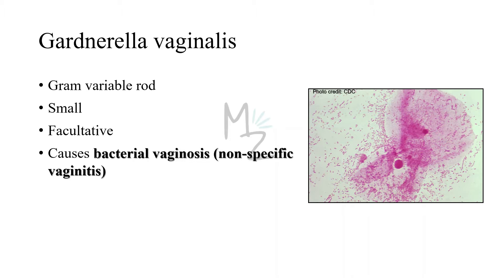Gardnerella vaginalis causes bacterial vaginosis. As it's a bacterium that causes infection in the vagina, that's why it is named bacterial vaginosis — and it's also called non-specific vaginitis. 'Itis' is a word used for inflammation, but in bacterial vaginosis there are no inflammatory changes seen. That's why it's named vaginosis, not vaginitis.